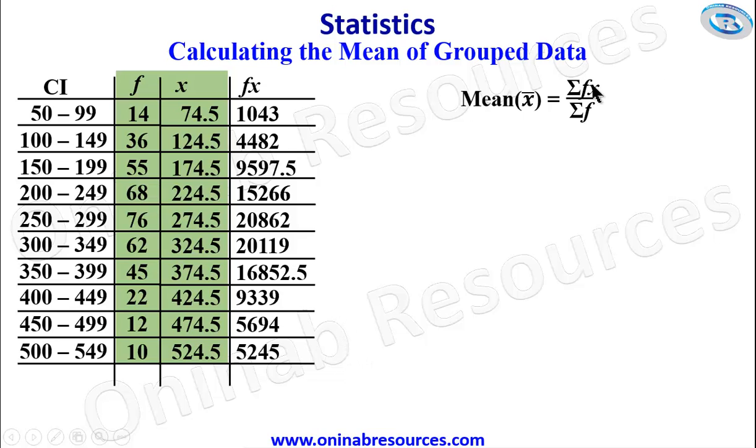So we've done creating fx as contained in the formula. What we do now is sigma fx, which means we are summing up fx, and summing up f, that is the frequency. So starting from summing up of the frequency, that is 14 plus 36 plus 55 plus 68 down to 10 gives 400. Please make use of your calculator in this calculation.